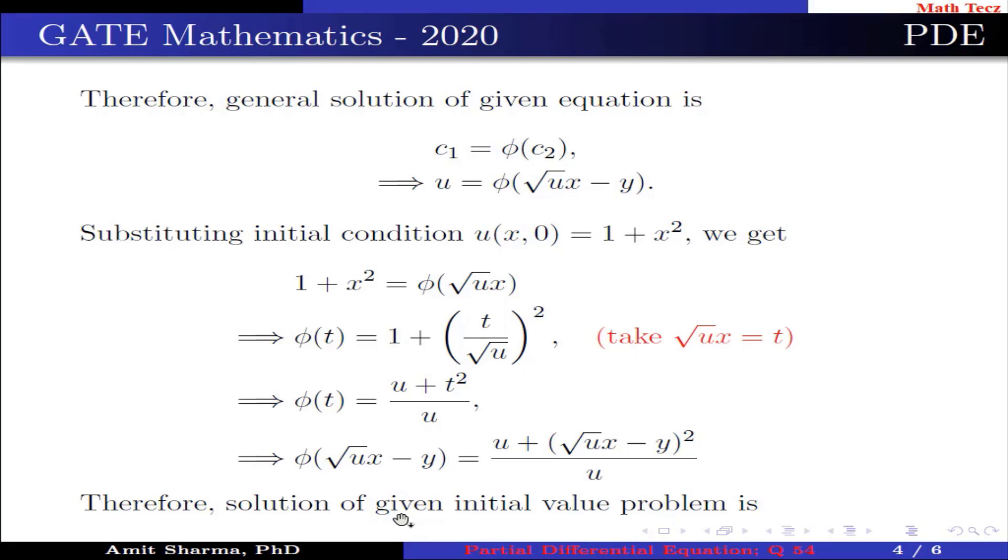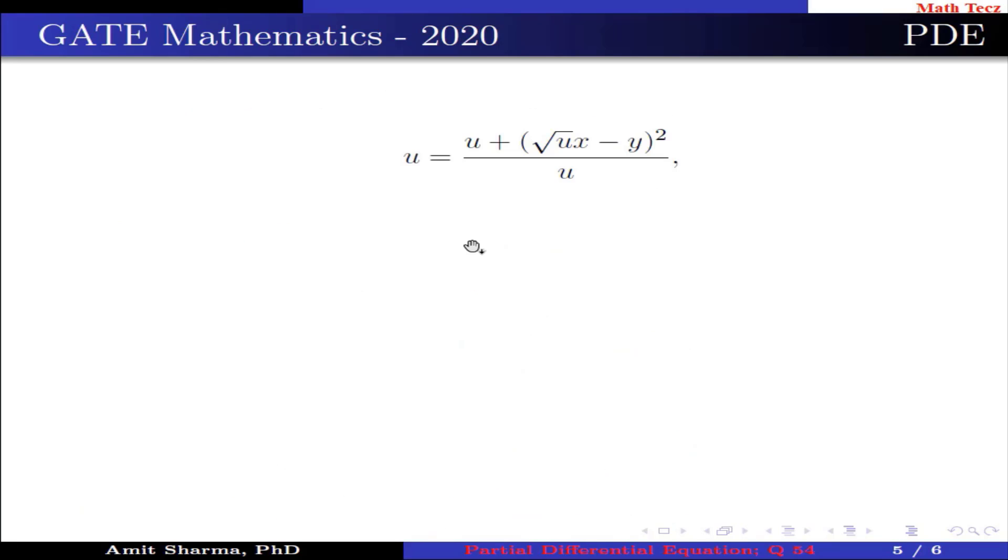Therefore, solution of the given initial value problem is u = u + (√u x - y)²/u, which is further simplified as u² = u + (√u x - y)².